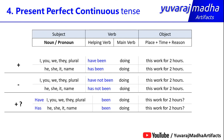For interrogative sentences, 'have' and 'has' come first: 'Have I been doing this work for two hours?' 'Have you been doing this work for two hours?' 'Have they been doing this work?' 'Have my friends been doing this work for two hours?' 'Has he been doing this work for two hours?' 'Has she been doing this work?' 'Has it been doing this work?' 'Has Kiran been doing this work for two hours?'